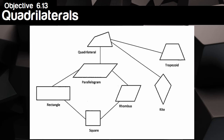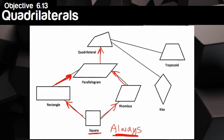Now we use this quadrilaterals family tree chart with some key words. Starting at square and going up the family tree, I can say a square is always a rhombus, a square is always a rectangle, and going further up, a square is always a parallelogram and always a quadrilateral. Similarly, a rectangle is always a parallelogram and always a quadrilateral. A kite is always a quadrilateral, and a trapezoid is always a quadrilateral.